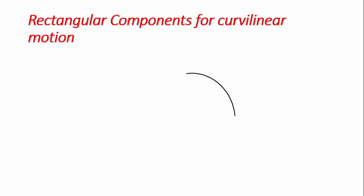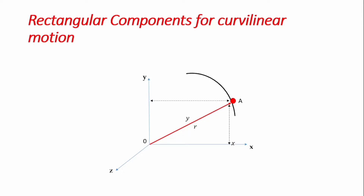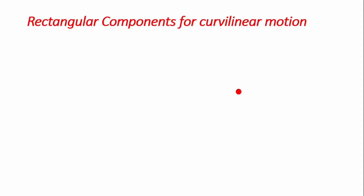Considering a curved path with a particle at point A, if we introduce our coordinate system from an origin, we can describe the position of the object from that origin using position coordinates based on the coordinate system — knowing the dimension from the x-axis and the y-axis. We say we are describing the object using the rectangular coordinate system, and there are formulations we want to derive that help undertake kinematic studies of a particle moving in a curved path.